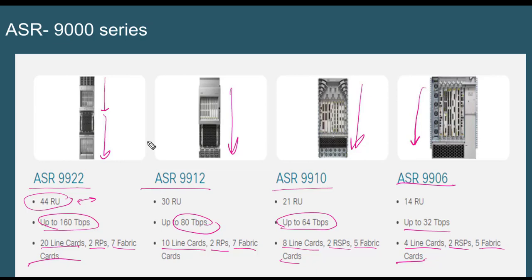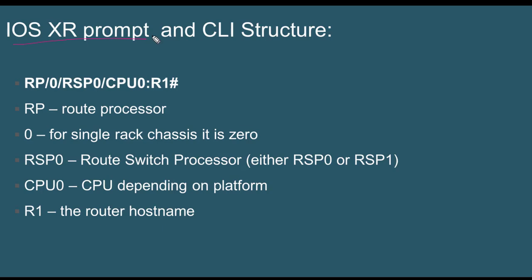This was a quick look at the Cisco range supporting IOS XR. Before we start the lab lessons, let's recap the IOS XR command prompt and CLI structure. The 'RP' stands for route processor. The next field — slash zero — indicates a single-rack chassis; in XRV it will always be zero. The next field is the route switch processor: if there are two RSPs, RSP1 is zero and RSP2 is one. The next field is the CPU, also always zero in XRV. Finally, the hostname — in our example, R1.